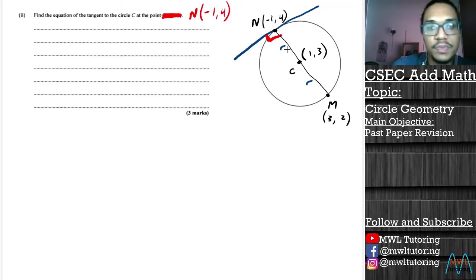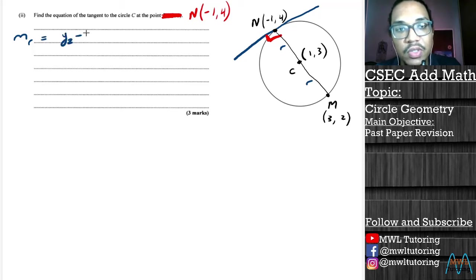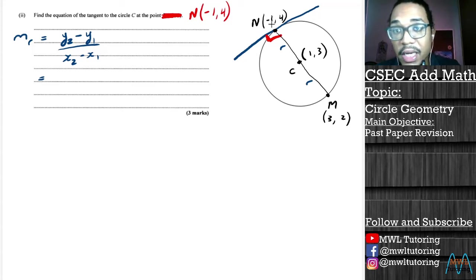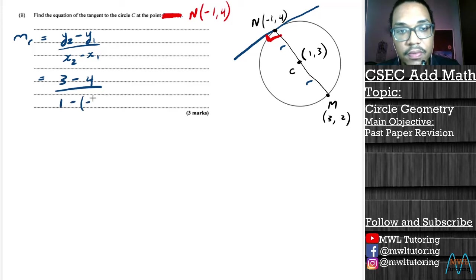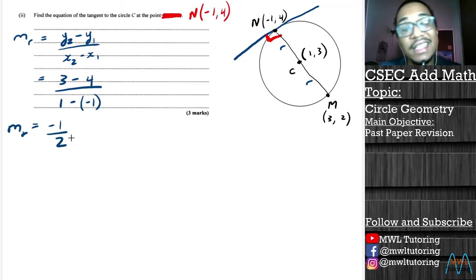That means we're dealing with perpendicular lines, so essentially we need to find the perpendicular gradient for our radius. The gradient of the radius uses the formula: (y₂ - y₁) / (x₂ - x₁). The numbers don't matter which you use first as long as you remain consistent. So: (3 - 4) / (1 - (-1)) gives us -1 / 2. The gradient of the radius is -½.